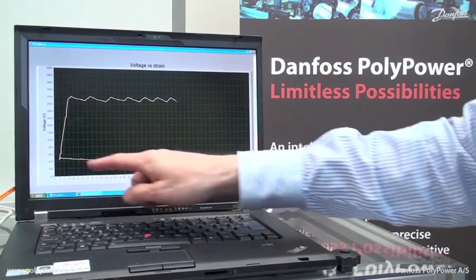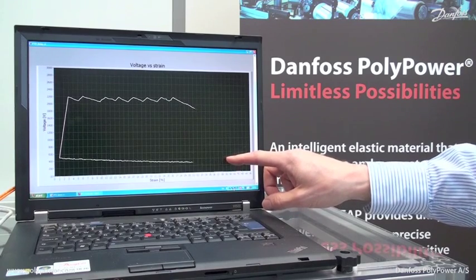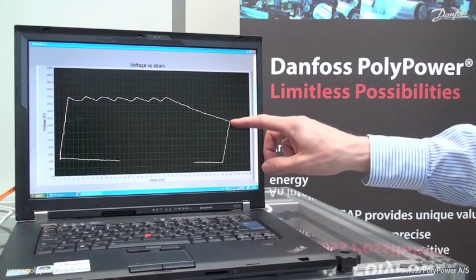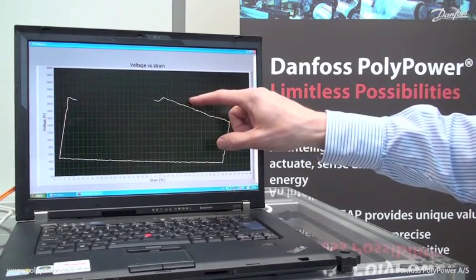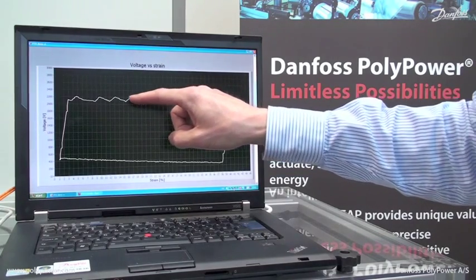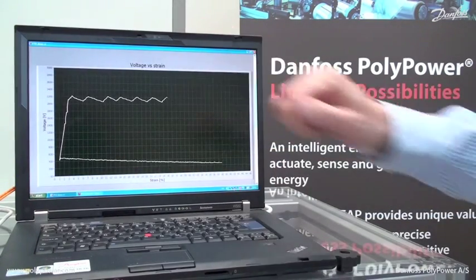You will see that we have strained the material at a relatively low voltage. We are then charging it. Then we are relaxing again. And up here you will see how we are actually harvesting the excess energy and then repeating the cycle.